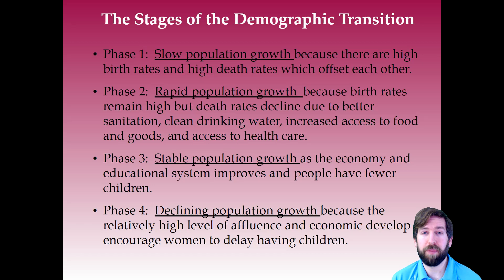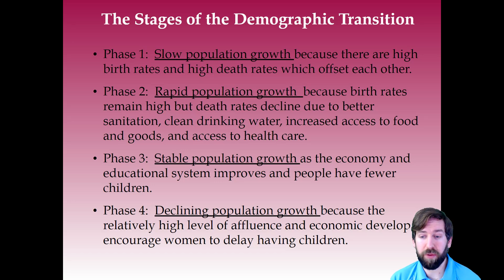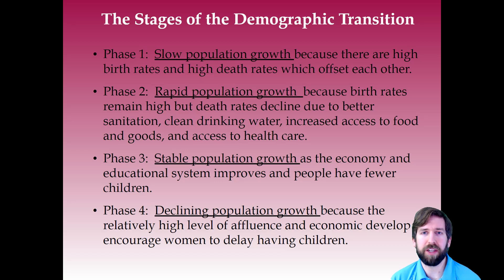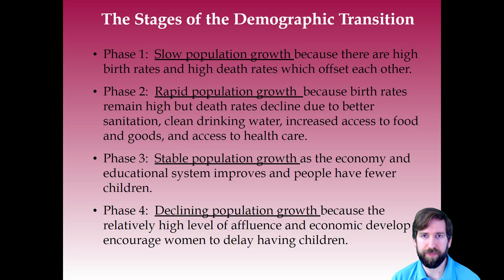After this rapid boom, eventually industrialization leads to phase three — the industrial period — where there is stable population growth as the economy and education system improve and people have fewer children. Birth rates start to decline and come closer to the death rate. This eventually leads to stage four — the post-industrial stage, like Germany or Japan — where there is declining population growth because the relatively high level of affluence and economic development encourages women to delay having children.